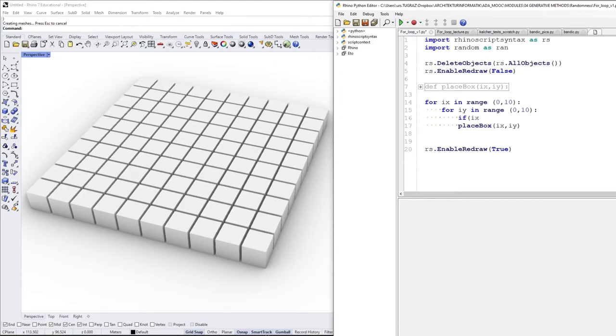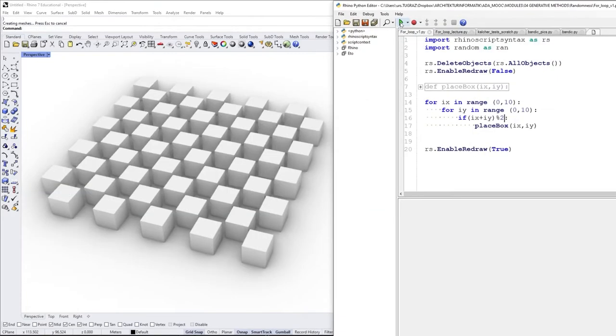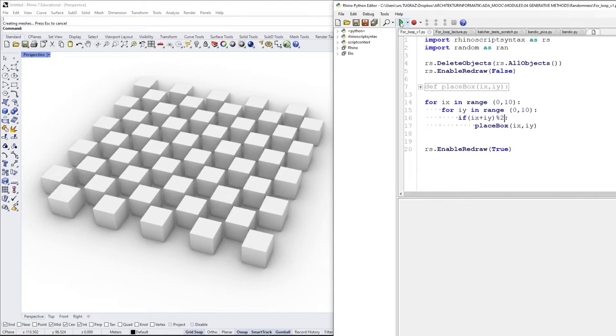Now let's introduce a condition. The box will only be created if the sum of X and Y is an uneven number. We do this with the modulo symbol, which looks like a percentage sign. The modulo always returns the leftover in the division of integers. So if you divide an uneven number by 2, that leftover is 0. In a conditional statement, 0 equals false. So if the conditional is false, no box is created.